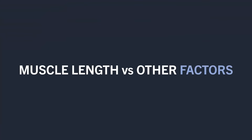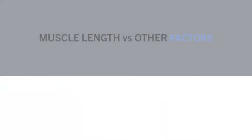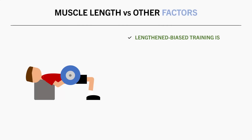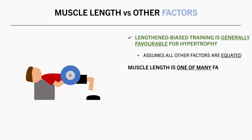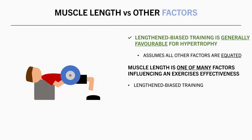So far, it seems that lengthened biased training tends to be overall slightly favorable for hypertrophy. However, it is important to understand an important caveat: when we say that training at longer muscle lengths is beneficial for hypertrophy, this assumes that all other factors are equated. Muscle length is just one factor contributing to the effectiveness of an exercise. If other factors are sacrificed just to achieve a greater muscle length, the results are not always as favorable.